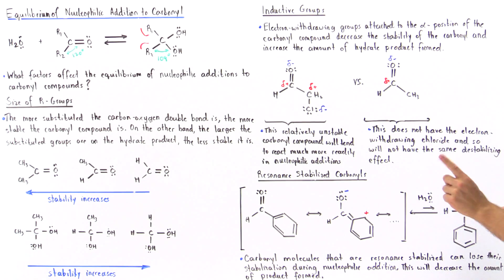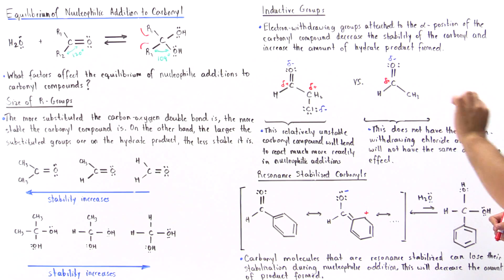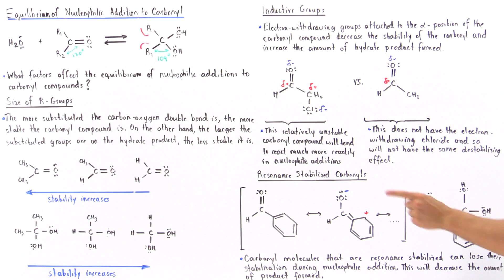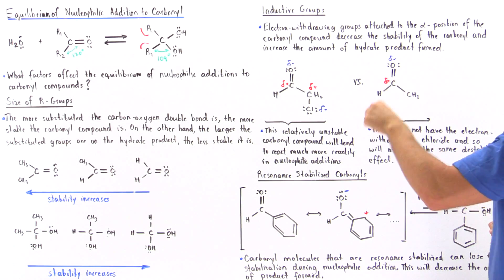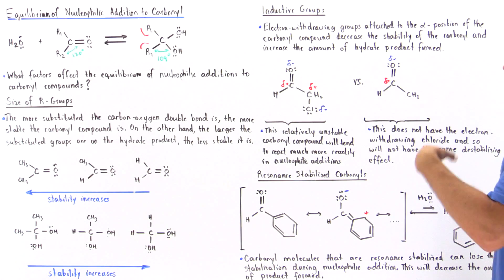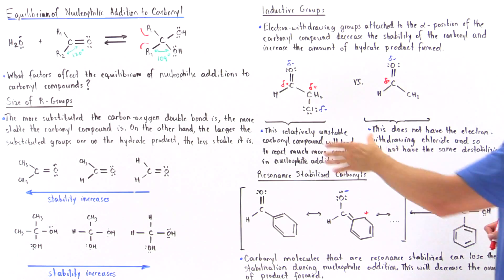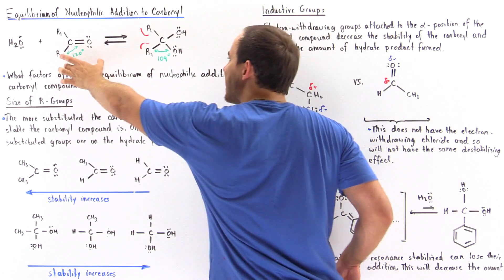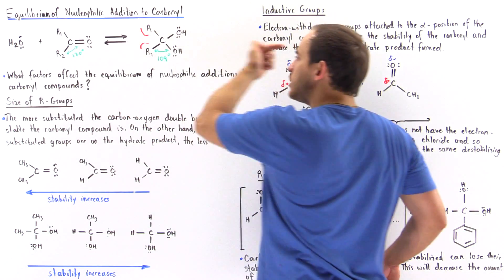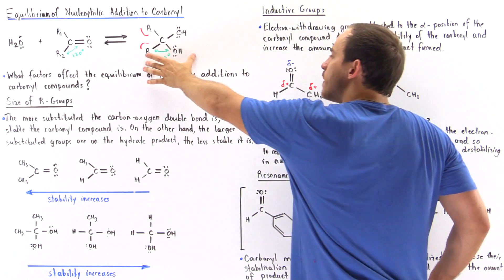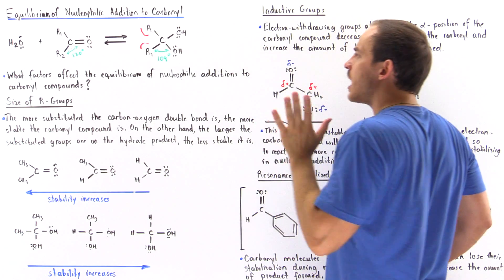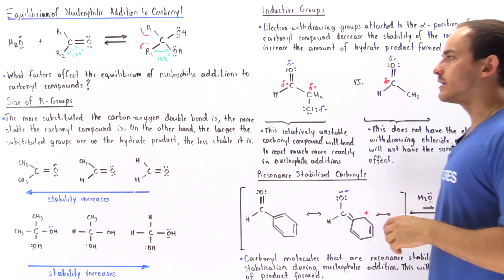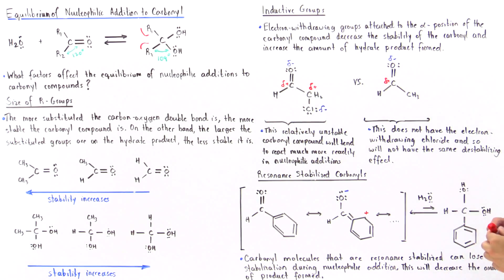So, if we attach an electronegative group to the alpha carbon position, that will destabilize the reactant and we will produce more of the hydrate product.